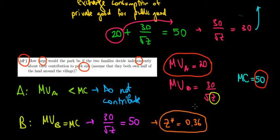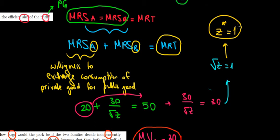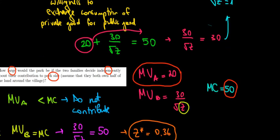Now, why is 0.36 less than before? Because in part C, we calculated the efficient size of the park to be equal to one meter square. So if both players take into account the optimal amount of the public good, thinking about the entire society, they would invest in a bigger park.